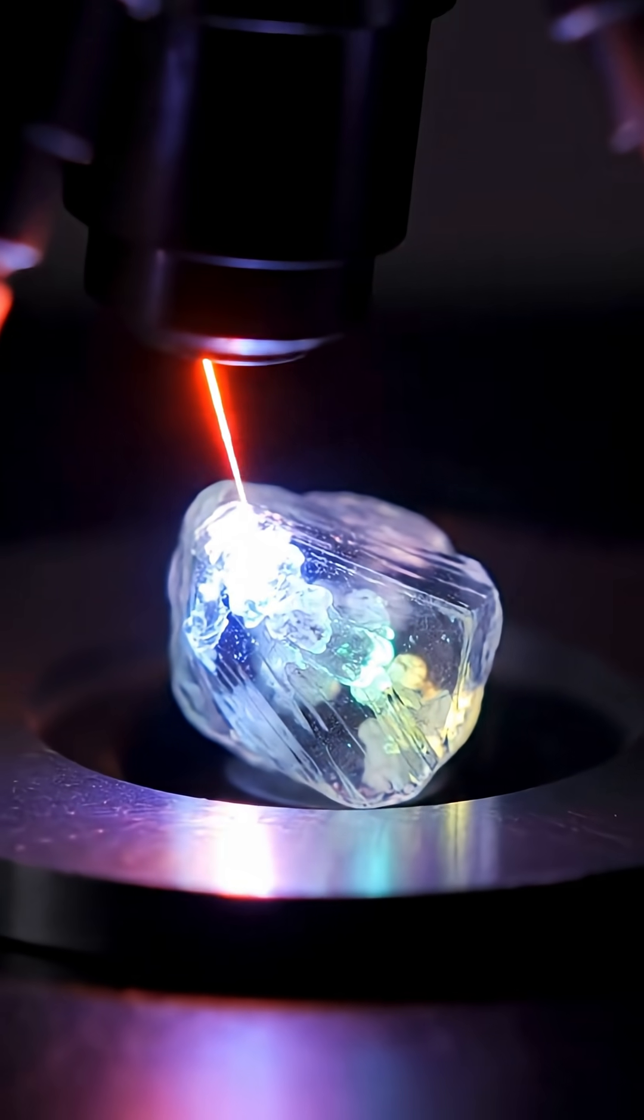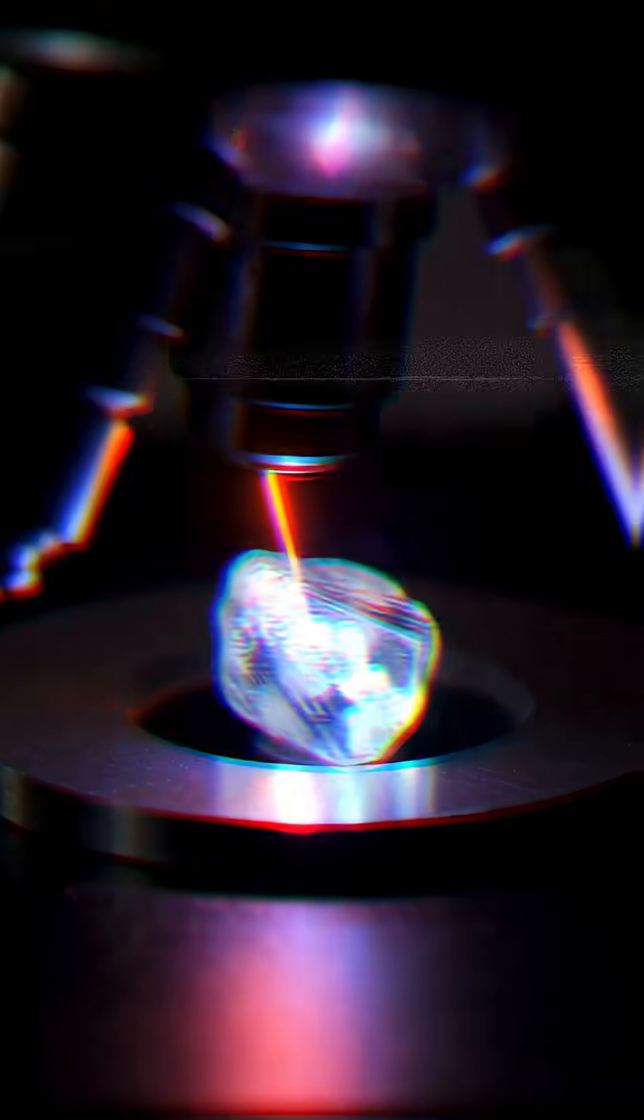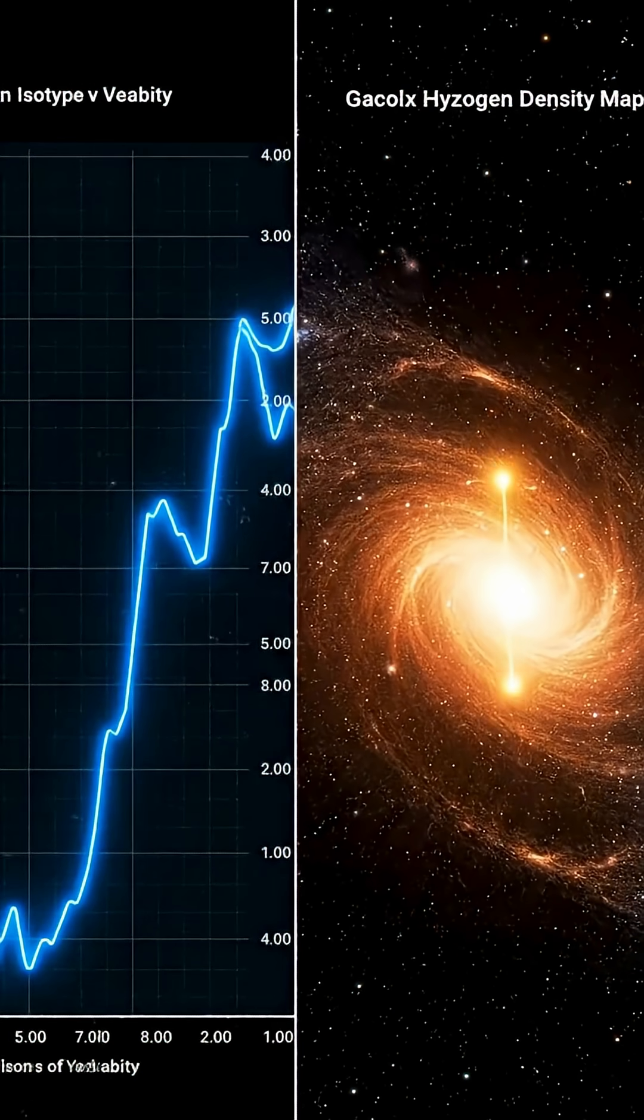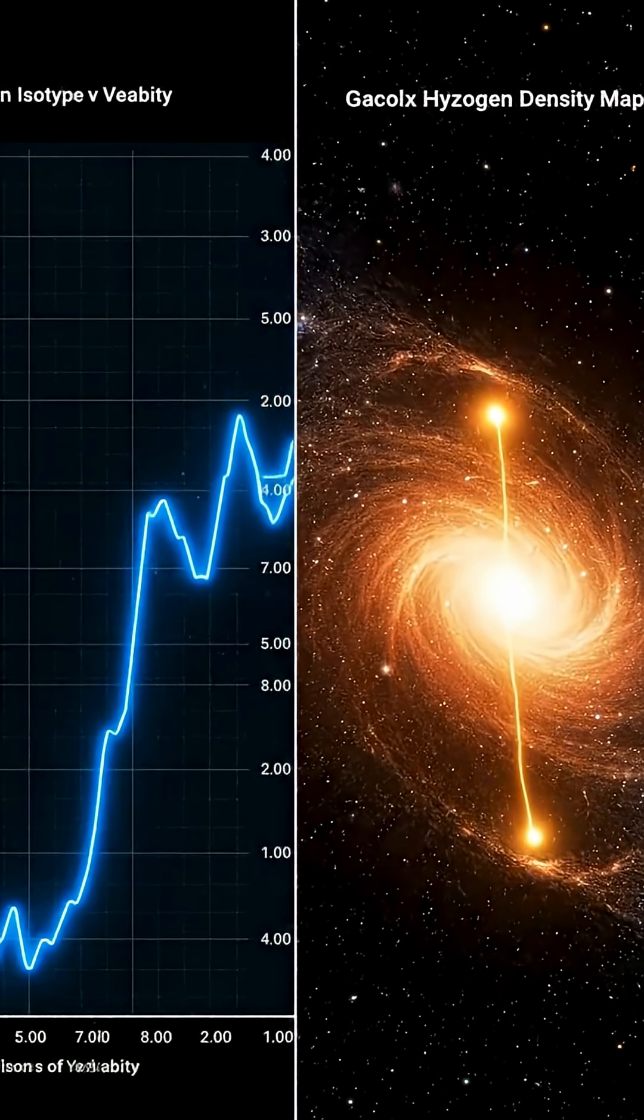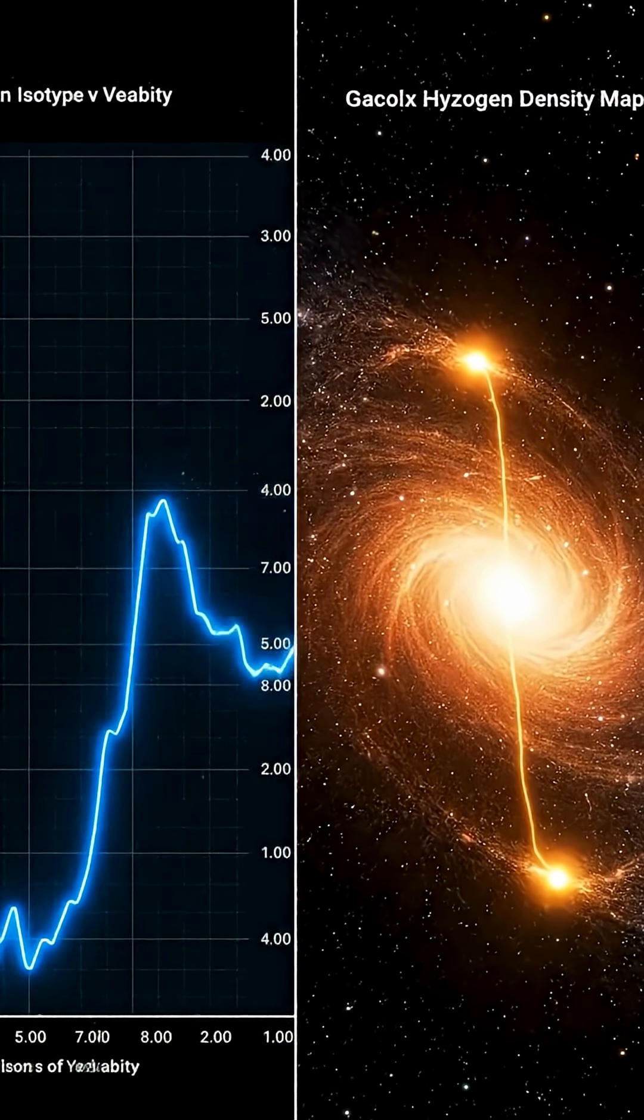When researchers matched that isotope record against hydrogen maps of the Milky Way, the rhythm became clear. Peaks in isotope variation lined up with spiral arm crossings.